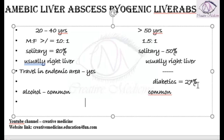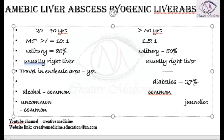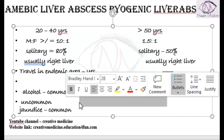Jaundice is common in pyogenic liver abscess, whereas it is uncommon in amoebic liver abscess.